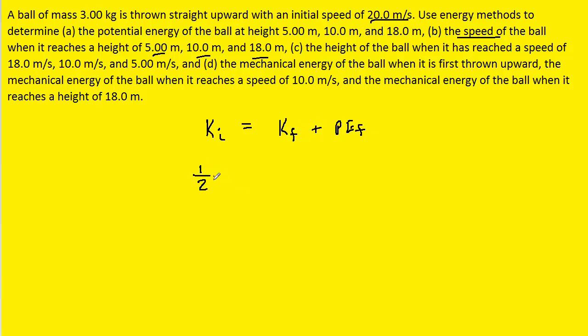Once again, the initial kinetic energy can be expanded, as can the final kinetic energy and the final gravitational potential energy. As before, we'll multiply each term by two. Since the mass appears in all three terms, we can divide each term by the mass to cancel it away.